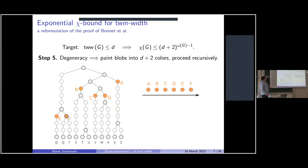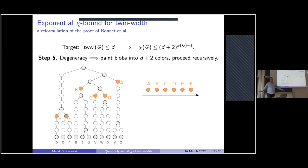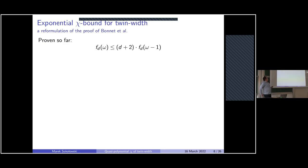Since every blob is connected to at most d+1 earlier blobs in the order, the blobs have degeneracy at most d+1 and can be colored in d+2 colors so that any two blobs of the same color share no edge. We now have d+2 induced subgraphs spanning the entire graph, each consisting of components with clique size at most ω−1. This gives the recurrence f_d(ω) ≤ (d+2) · f_d(ω−1), and since f_d(1) = 1, we get f_d(ω) = (d+2)^{ω−1}.